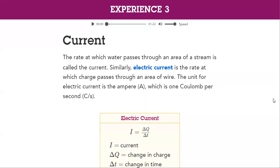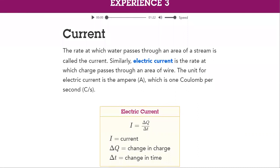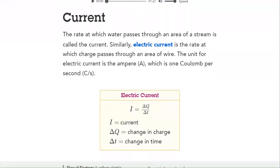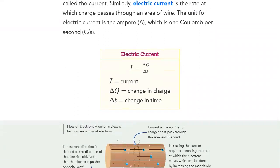Then we come to the most important thing: current. Current is the rate at which water passes through an area of a stream. Similarly, electric current is the rate at which charge passes through an area of wire. The unit for electric current is the ampere, where one coulomb per second.